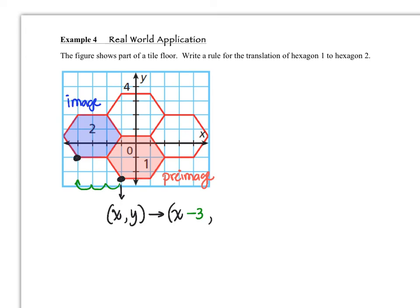What happened in the y direction? It looks like we went up one and a half units, a half and then one. So that means our mapping statement is going to say, because it's going in the positive y direction, y plus 1.5. That is the mapping rule between hexagon 1 and hexagon 2.